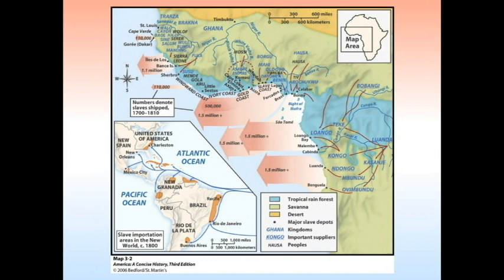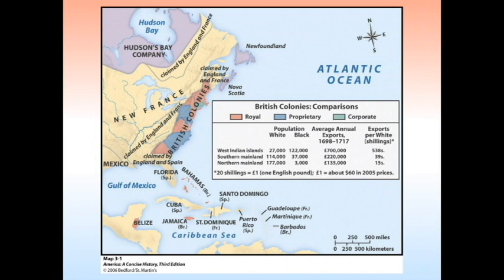This map shows where the slaves came from — largely from the ivory and gold coast and the Congo region — with millions of people displaced, many going to South America, the Indies, and the British colonies in North America. This also shows the breakdown of royal, proprietary, and corporate colonies. The West Indian Islands had a much higher exports per capita per white individual — the southern mainland about 40 shillings, and the northern mainland about 15 shillings.